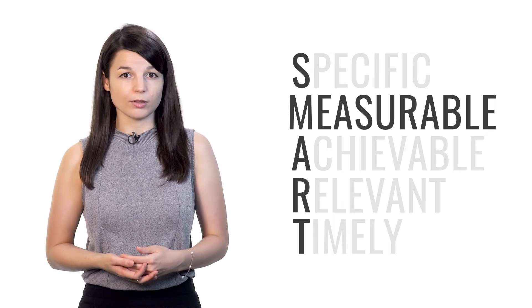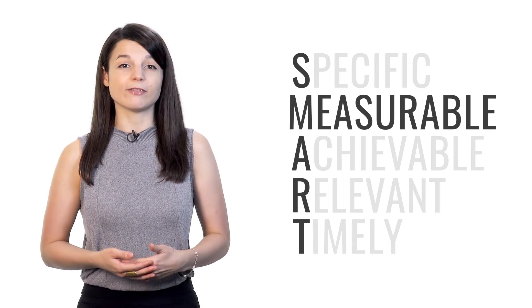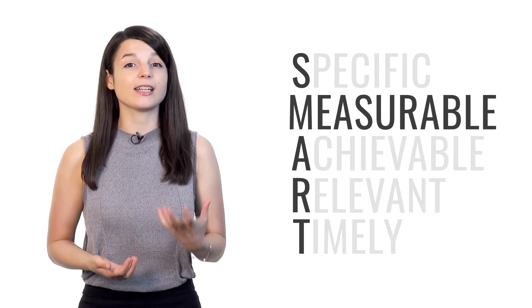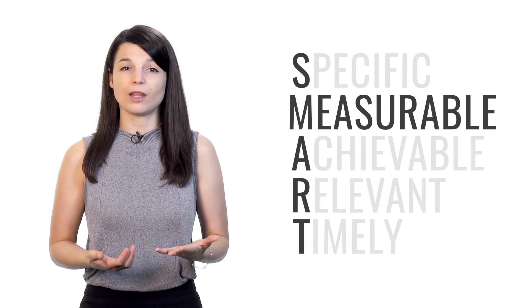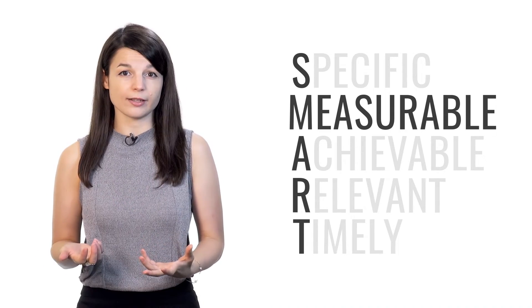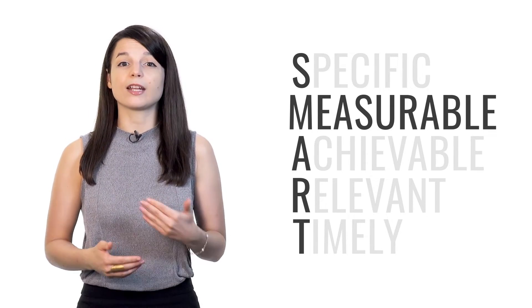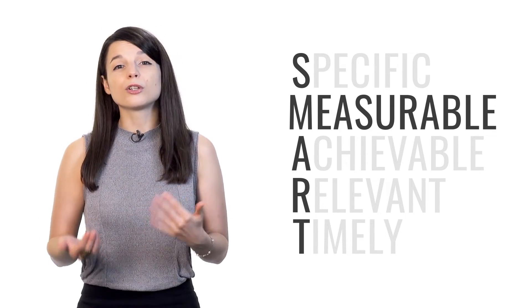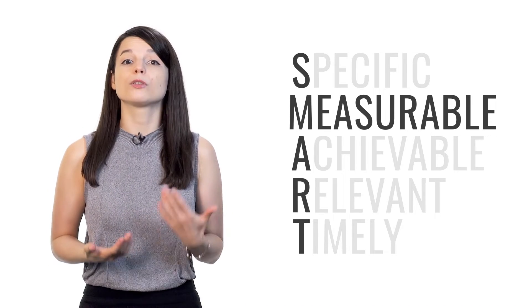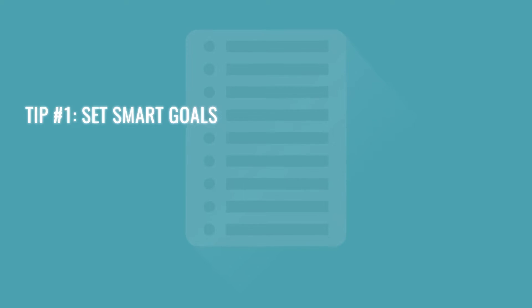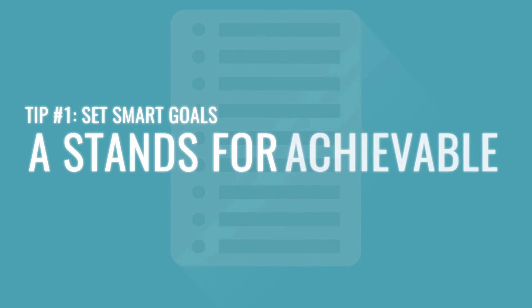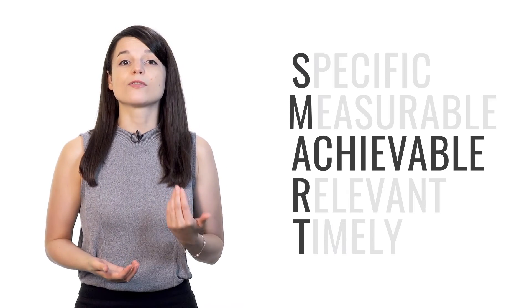M stands for measurable. Your goals should be quantifiable. They should be able to indicate progress in some way. You have to be able to track your progress, otherwise you won't know if you're getting any closer to your goal. As you see yourself getting closer and closer to your goal, your motivation will go up. So, your goals need to be measurable.